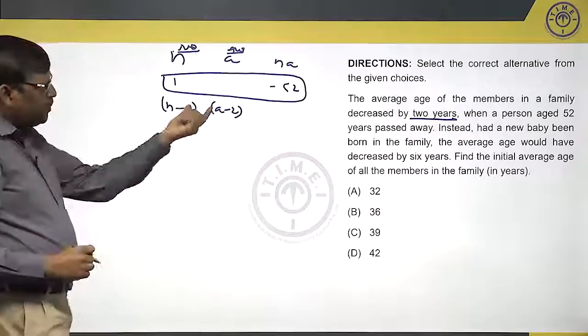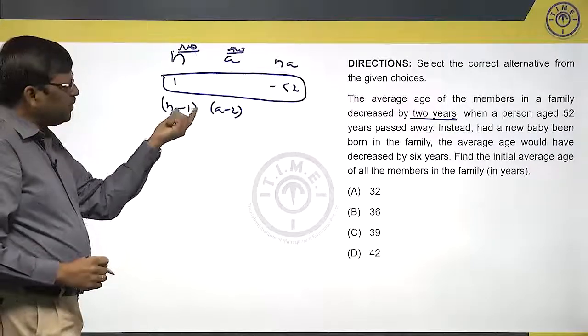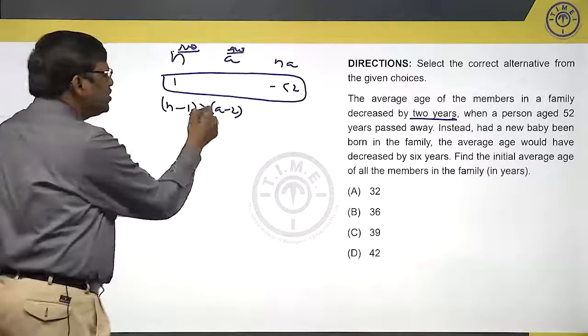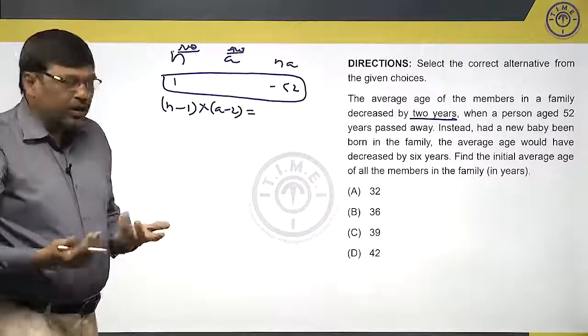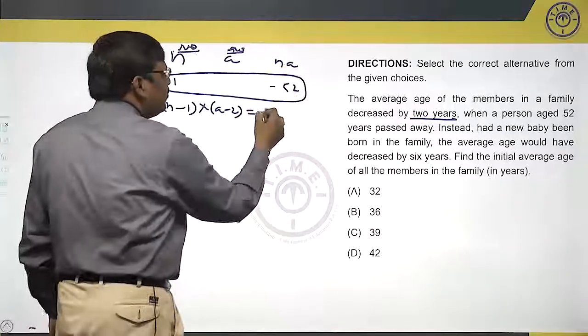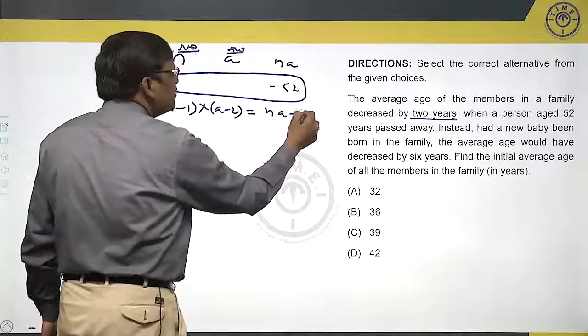Now, this number of people into average, this is the number of people, this is the new average. The product should give me the sum. But what is the sum? From n a, if I have to remove 52, the sum should be n a minus 52.